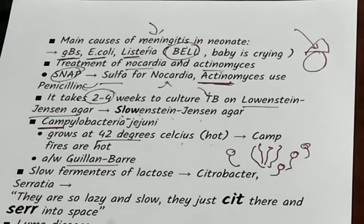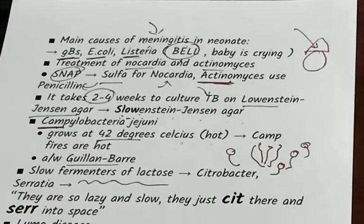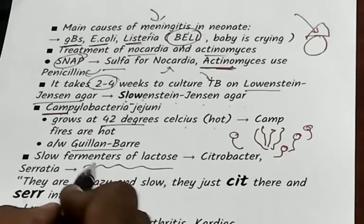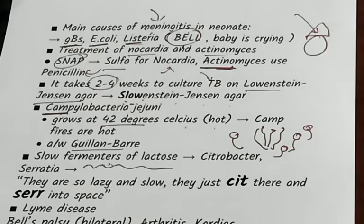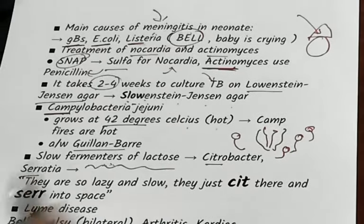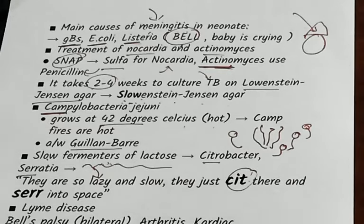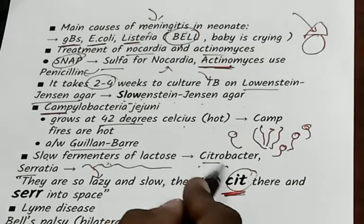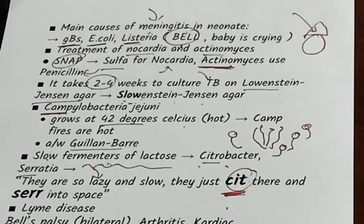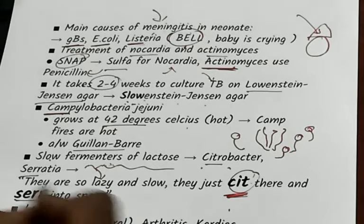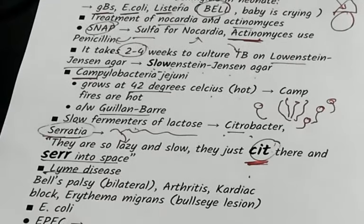Slow fermenters of lactose — a very important favorite MCQ. Slow fermenters of lactose: Citrobacter and Serratia. Mnemonic: 'slow, come at last, lazy hen' — Citrobacter is slow, and Serratia follows.